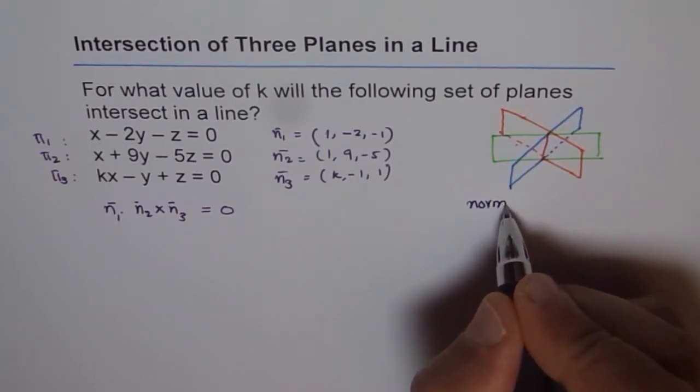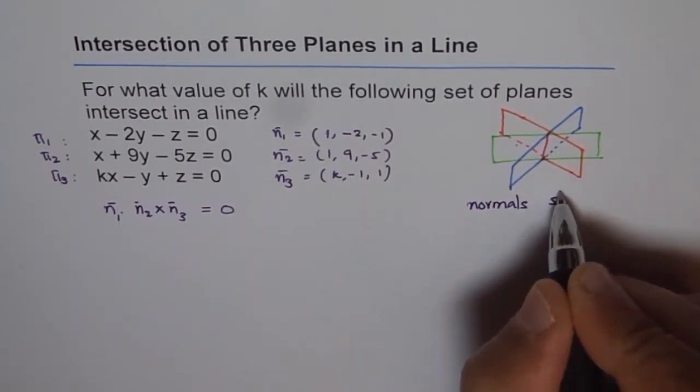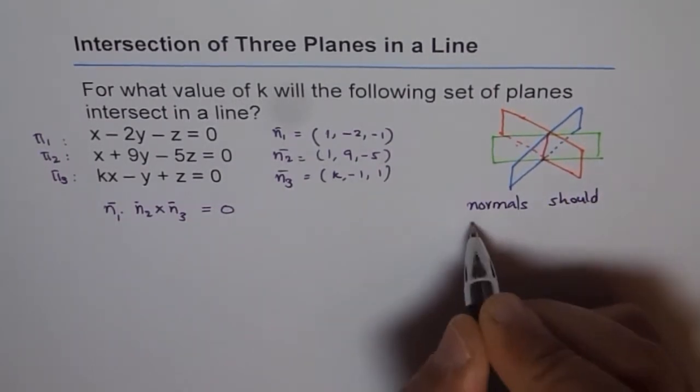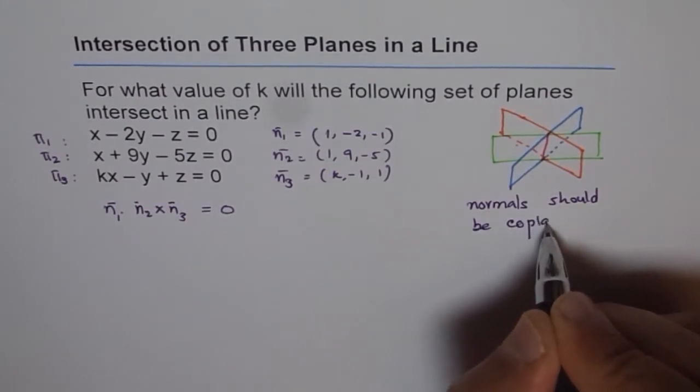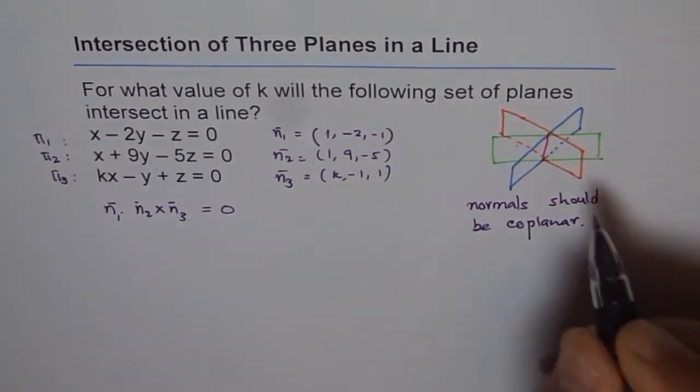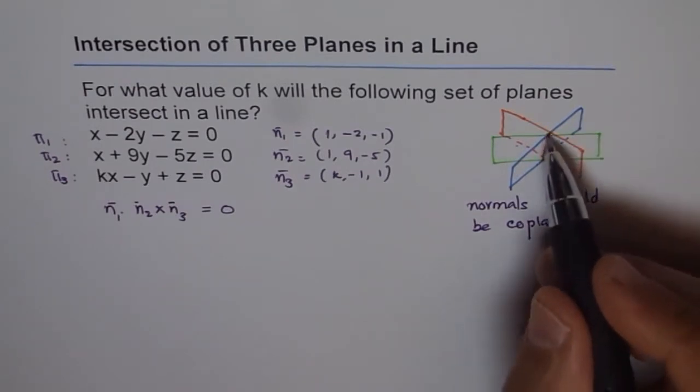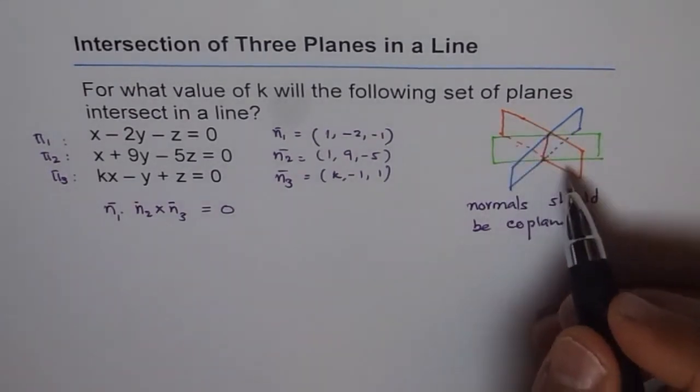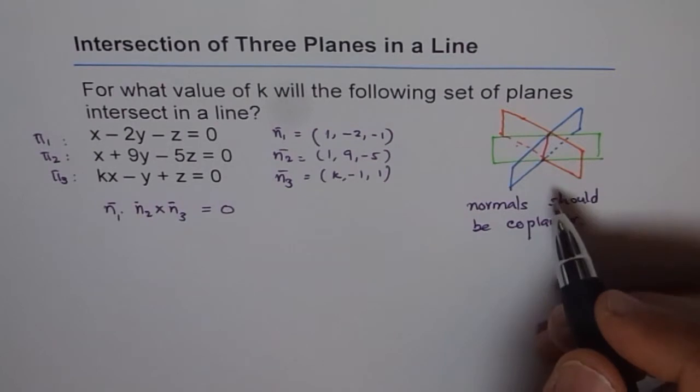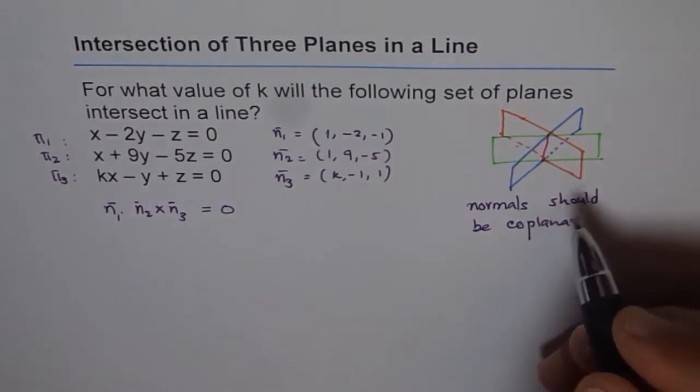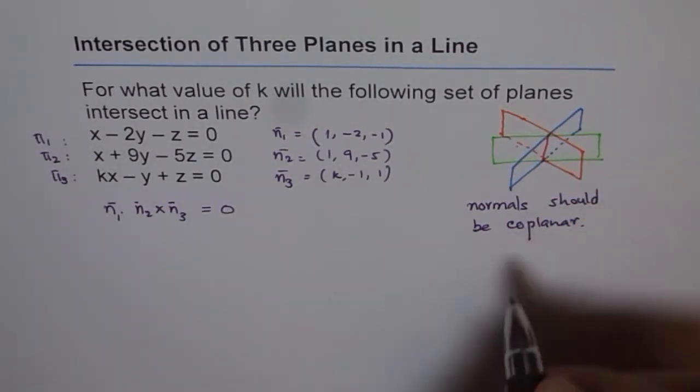So one condition is that the normals should be coplanar for this because this line is common to all. That means normals should be coplanar. So if normals are coplanar because this line is contained in all the three planes, only then this can happen. So for normals to be coplanar, think like this.